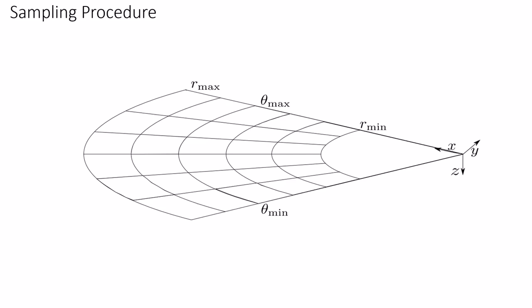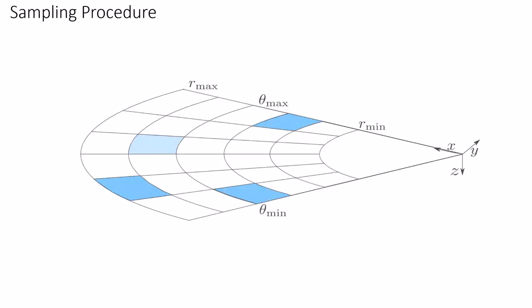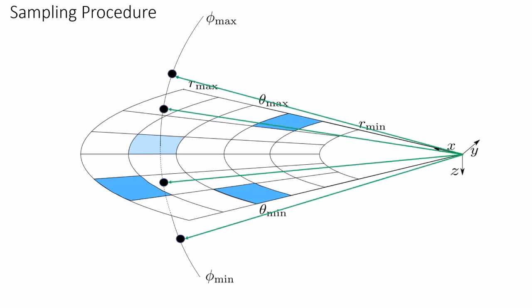To estimate the image formation model, we sample points on both arcs and acoustic rays. At each training iteration, we first sample random pixels. At each sampled pixel, we construct an arc constrained to phi min and phi max, and we sample random points along it. For each sampled point on the arc, we construct an acoustic ray and then sample points along each ray.